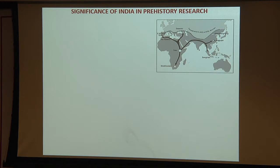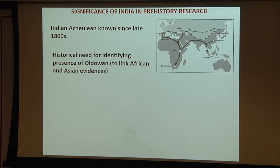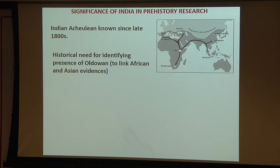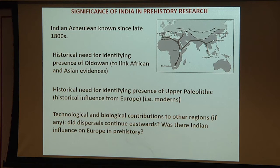The significance of Indian prehistory: the Indian Acheulean has been known since the 1800s, and there's a historical need for identifying Oldowan assemblages. Because of India's geographic position, South Asia is seen as a potential route linking dispersals from East Africa to Java, where we have 1.8-million-year-old fossils, and also to Georgia — but whether India was indeed that route is not clear. There's also a historical need for identifying upper Paleolithic evidence, and questions about how much of a contribution India made to other regions — not just technologically but biologically — including gene flow and possible migrations from India to Southeast Asia.